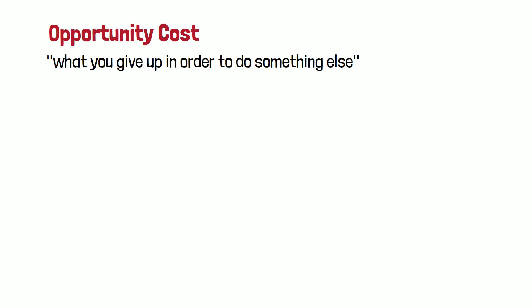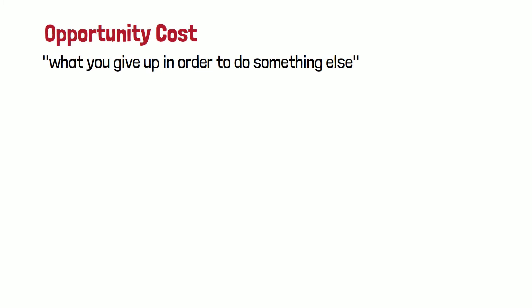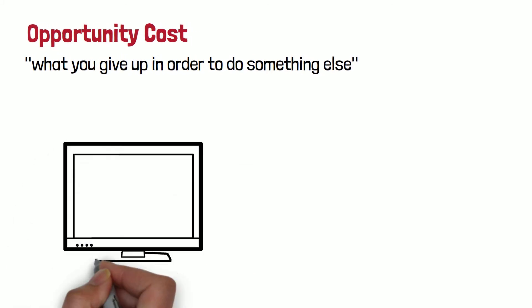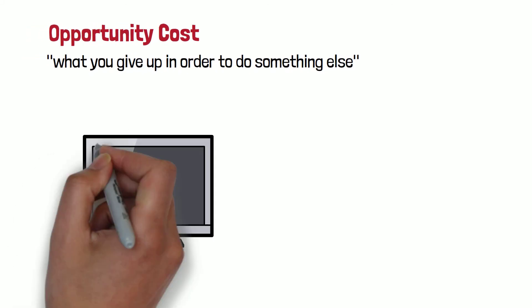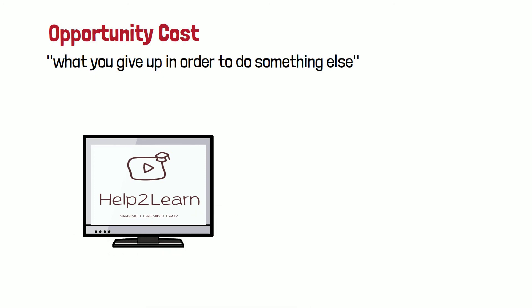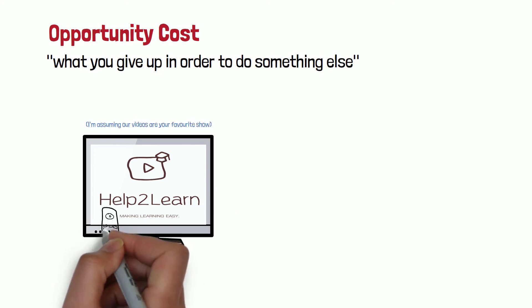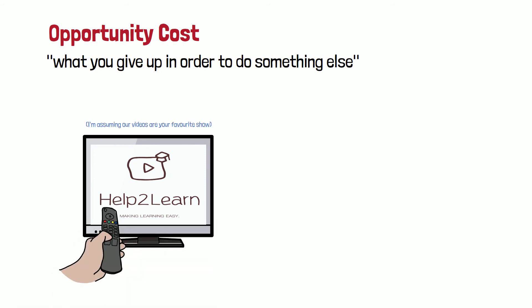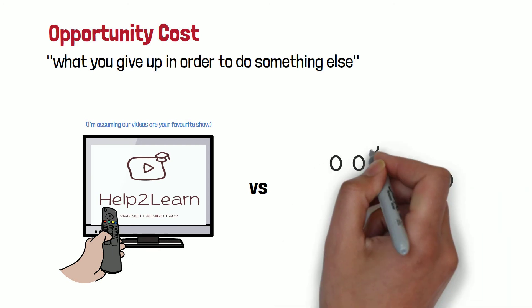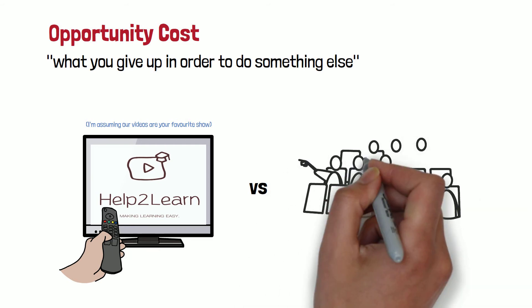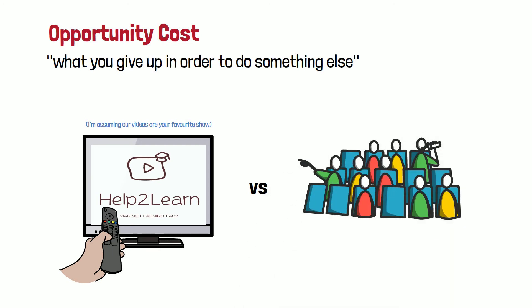In episode 1 I told you a little story. You wanted to watch an episode of your favorite TV show tonight, but a great friend of yours invites you to watch a new movie at the cinema. You have to choose one in detriment of the other. If you choose to watch the TV show at home, your opportunity cost is not being able to watch the movie that night. If you go out and see the movie, then your opportunity cost is not watching your TV show at home.